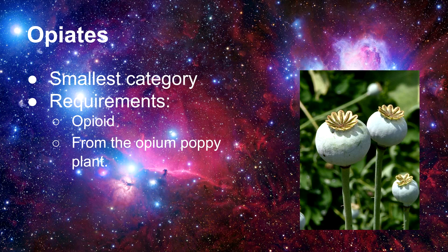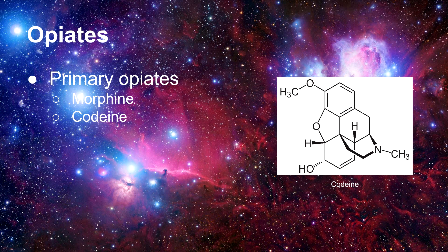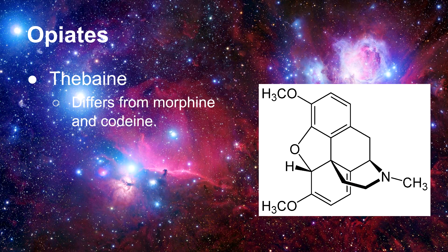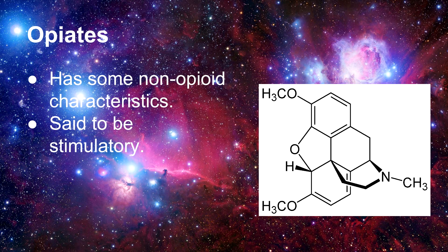The smallest category is opiate, since a drug is only an opiate if it is both an opioid and found in Papaver somniferum, also known as the opium poppy. Morphine and codeine are the primary opiates. Along with being used on their own, they are often used to manufacture other pharmaceuticals. One of the other drugs found in the opium poppy is thebaine, and while it is called an opiate, it's not quite like morphine and codeine. Thebaine is used in the synthesis of opioids, but in its natural form it binds like an opioid yet produces non-opioid effects.